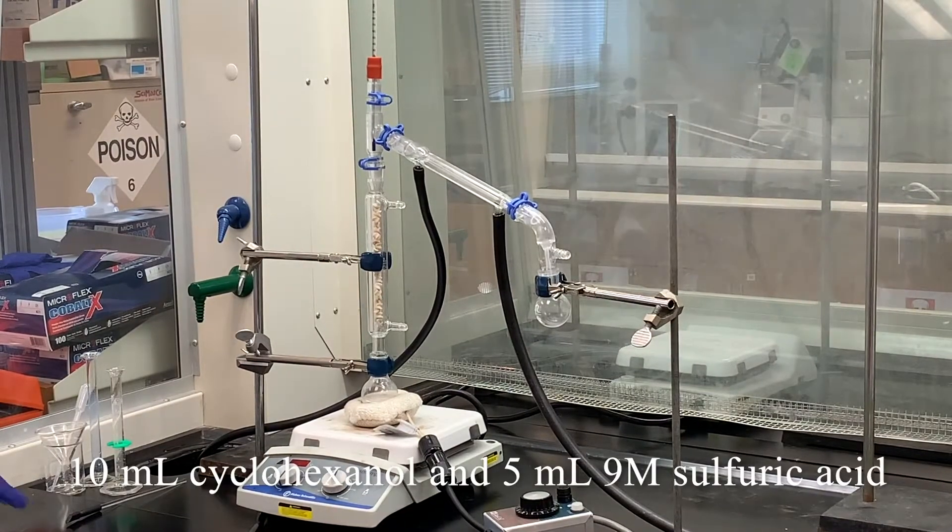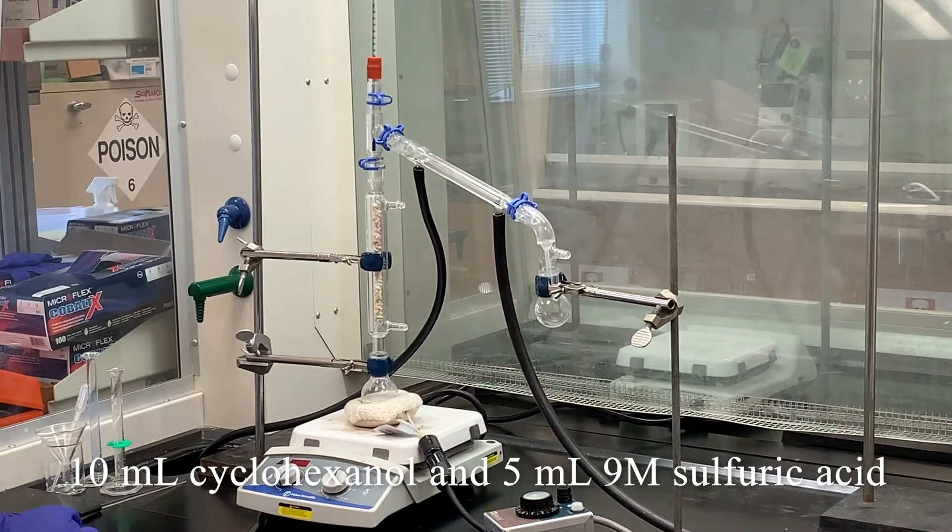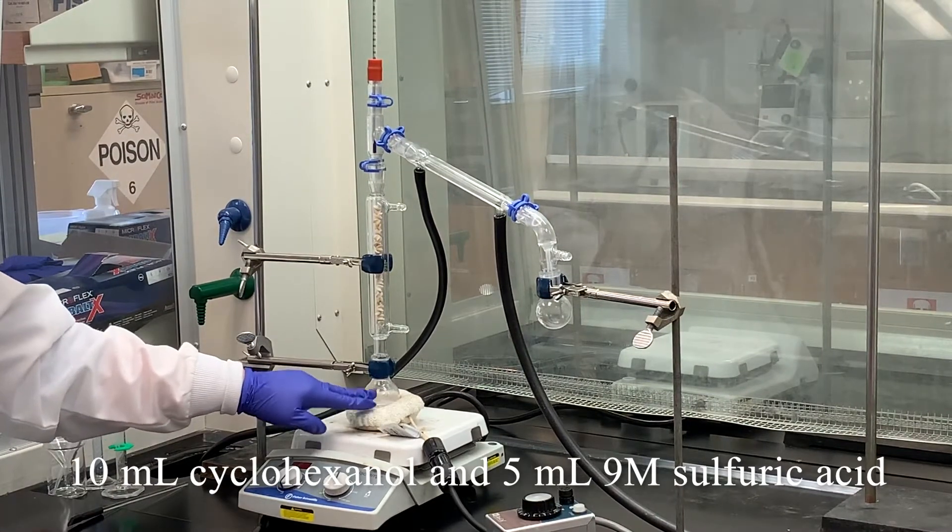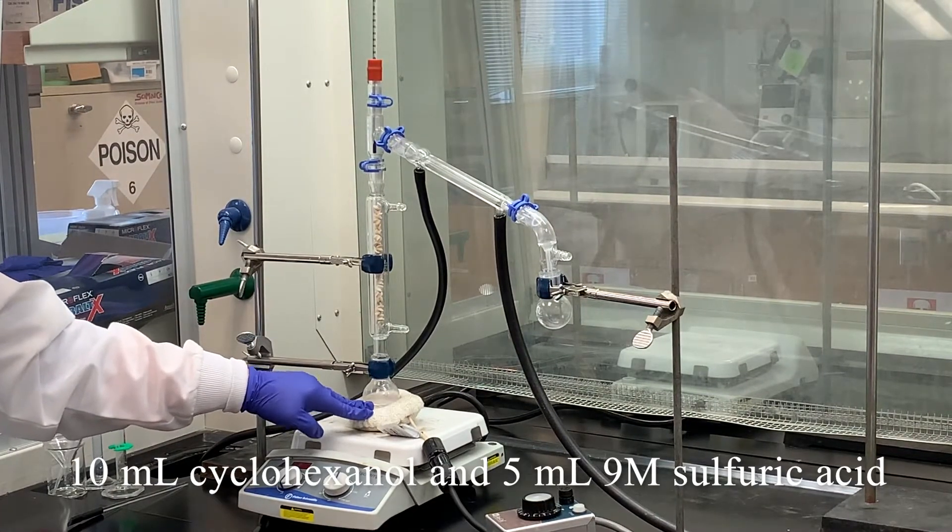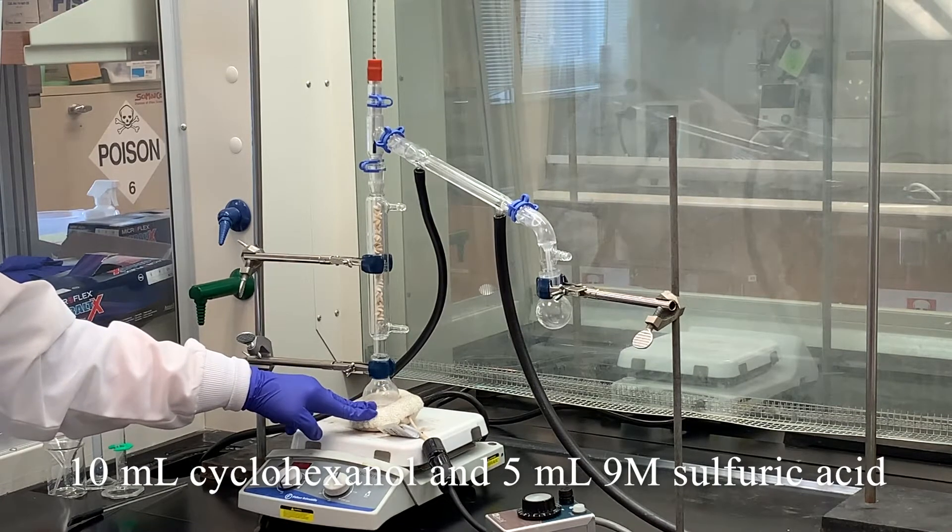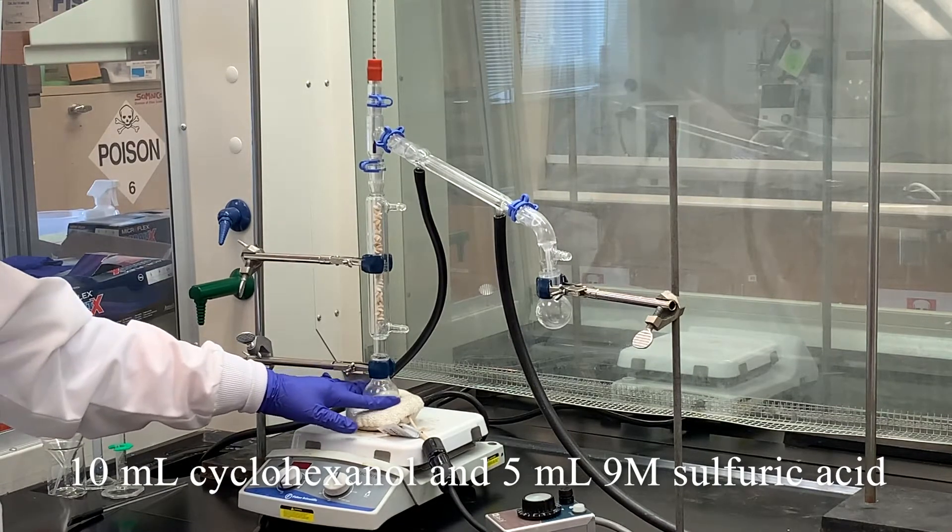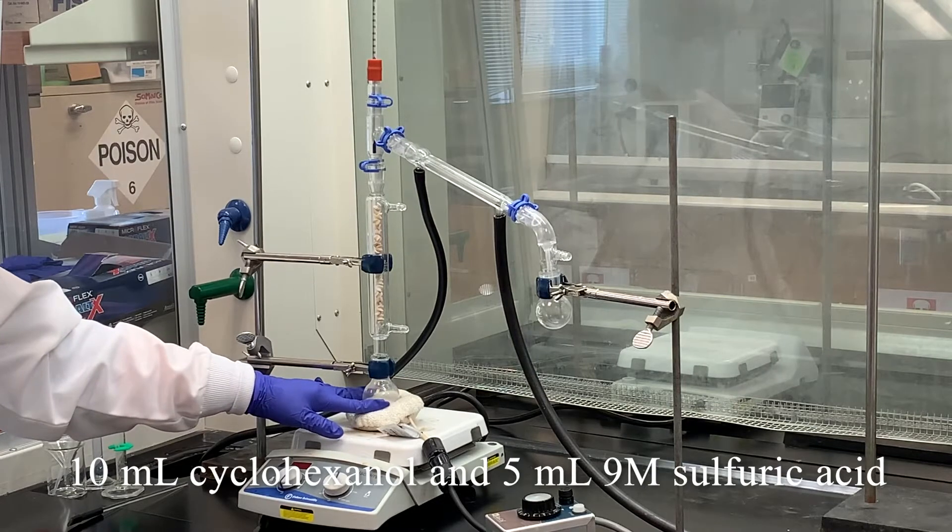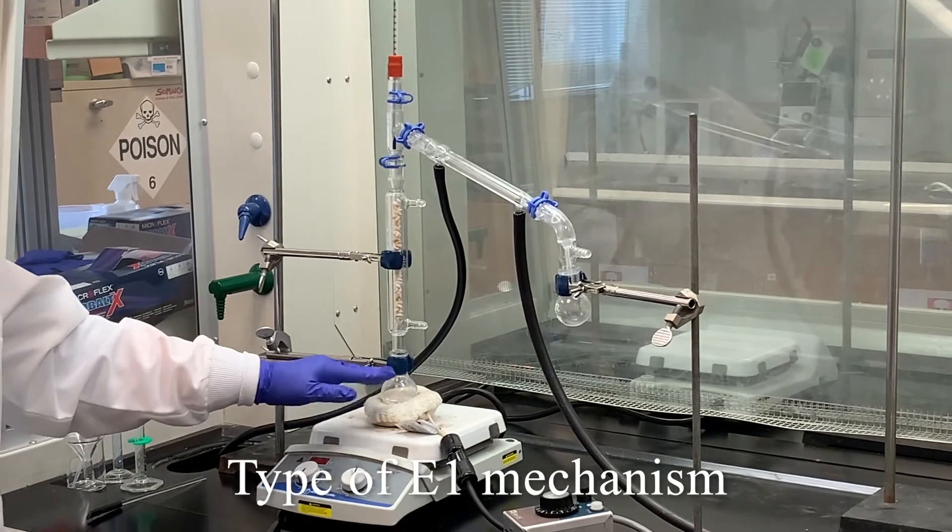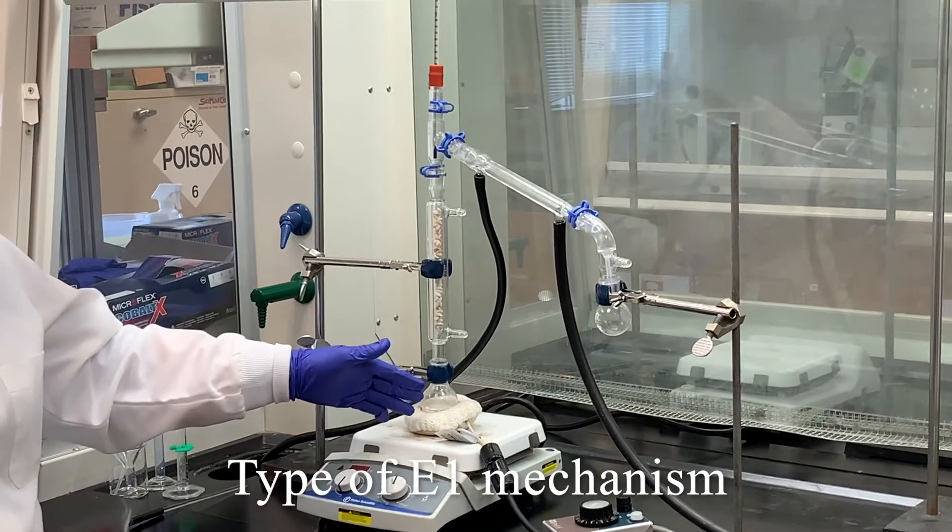And we're going to do this by having a mixture of cyclohexanol. I have 10 mLs of cyclohexanol and 5 mLs of non-molar sulfuric acid. And this is a type of E1 mechanism, and usually heat is needed to facilitate this reaction.